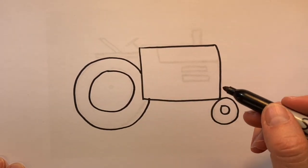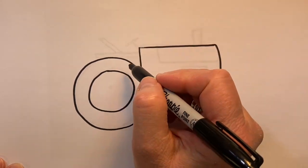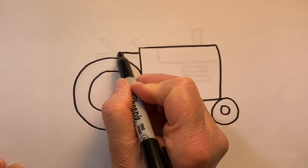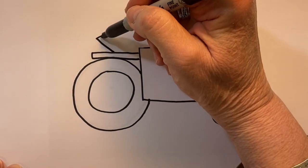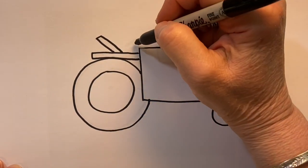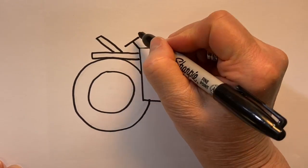And then I'm going to create the base for the seat of the tractor, slant a line, and the steering wheel.